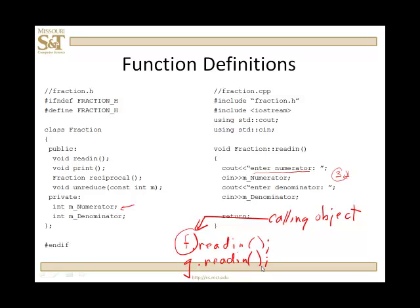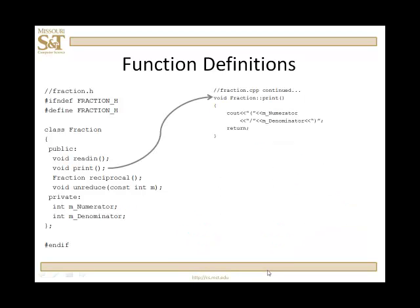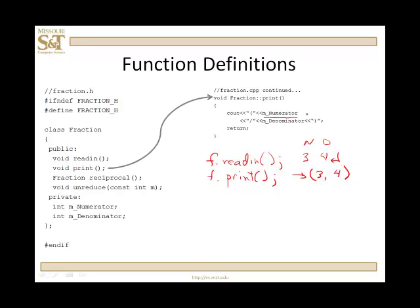Continuing on, I want to define the print function. The print function is simply going to output the numerator and denominator in a nice format. If f called readin and we entered 3 and 4, then when f calls print, the format is a parenthesis, the numerator, slash, the denominator, and a closing parenthesis. M underscore numerator — whose numerator is it? It's the calling object's. Whose denominator? The calling object's. If g reads in 8 seventeenths and then calls print, 8 seventeenths is going to come out, not 3 fourths.